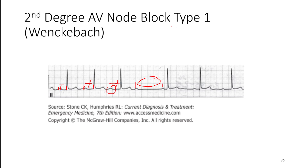In Wenckebach, we have a progressively increasing PR interval that usually starts above 0.2, gets longer and longer until it drops out. Patients will often report they feel like their heart skips a beat. On physical exam, if you're palpating or auscultating, you'll hear that skipped beat too, and it'll happen in a consistent pattern — usually every third beat. If there's no conduction and depolarization of the ventricle, there's no contraction, so that's basically what we observe.